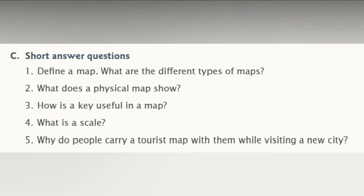What is a scale? The ratio of the distance between two places on a map to the actual distance between these two places on the ground is called a scale. Why do people carry a tourist map with them while visiting a new city? People carry a tourist map with them to find the location of places.